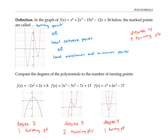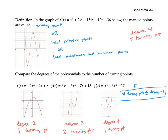So you might conjecture that this is always true, but in fact it is not always true. In this last example, the degree is four but the number of turning points is one, not three. It turns out that while the number of turning points is not always equal to the degree minus one, it is always less than or equal to the degree minus one. That's a useful fact to remember when sketching or recognizing graphs of polynomials.